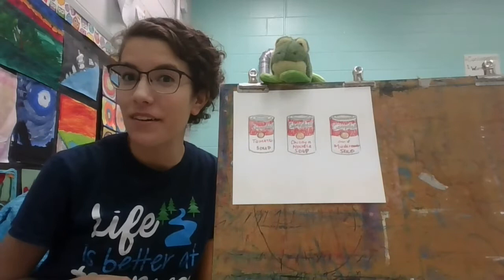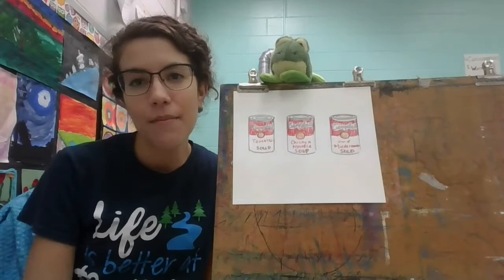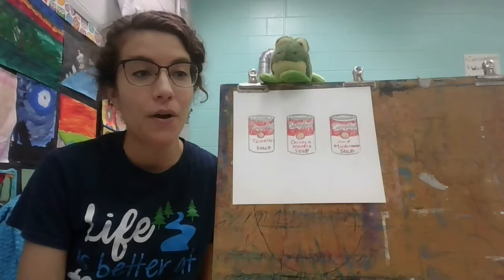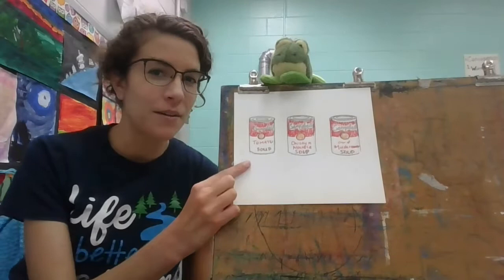He did that with the money, with the soup. He has a painting of Coca-Cola bottles where he repeated those too. So today for your art assignment, I want you to look around your kitchen, look around your house, think about things that you like — things that are popular for you and your family or your friends — and draw those things.